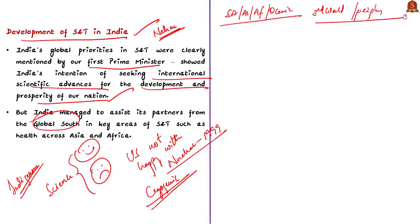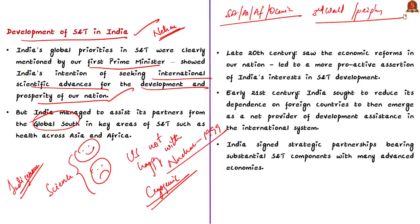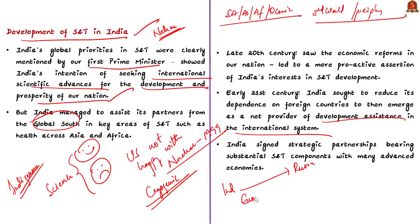In the late 20th century, India went for economic reforms in 1991, leading to more proactive pursuit of its interests in science and technology. By the early 21st century, India sought to reduce its dependence on foreign countries and emerge as a net provider of development assistance. India even offered a line of credit to Russia to develop its eastern region. China's aggressiveness and India's smooth ties with the US and European countries helped India design and develop in strategic spheres like nuclear and space, and led to signing of strategic partnerships in sectors like science, space, nuclear, and nanotechnology. Within 70 years of independence, India managed to show its prowess in S&T internationally.